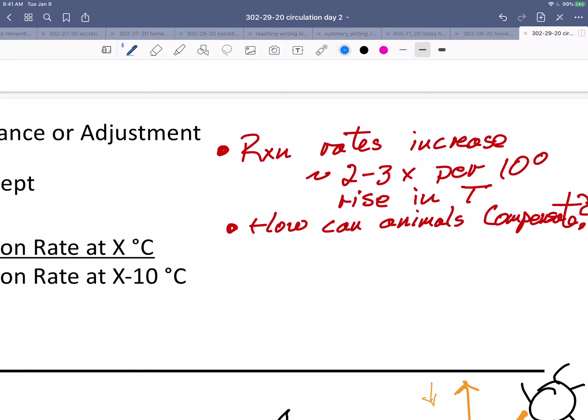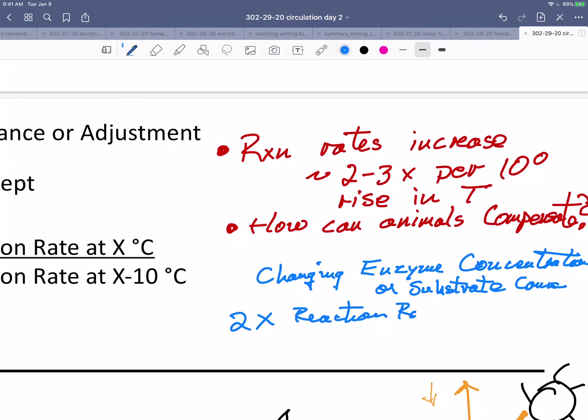Well, the main way they compensate is by changing enzyme concentrations or substrate less often. So if the reaction rate is twice as fast at a higher temperature, so 2x reaction rate, but one half the enzymes, then we've perfectly compensated.